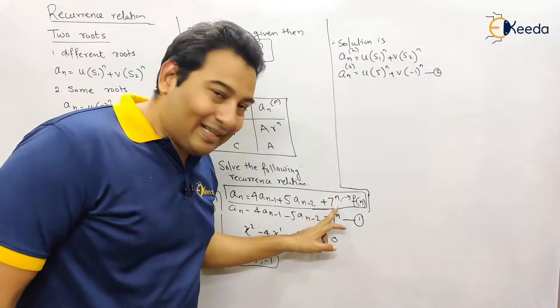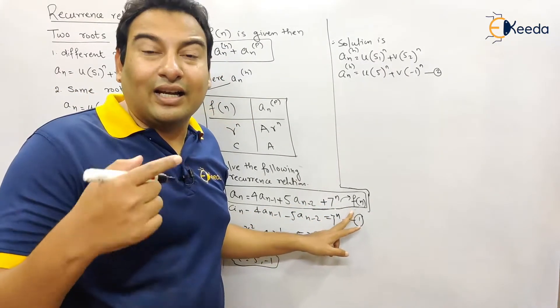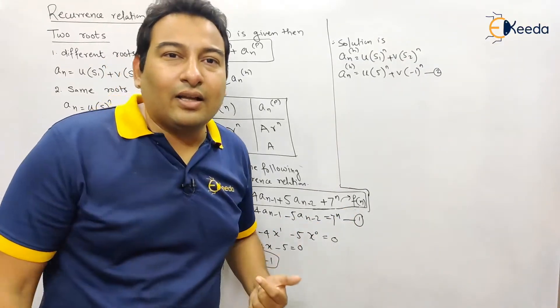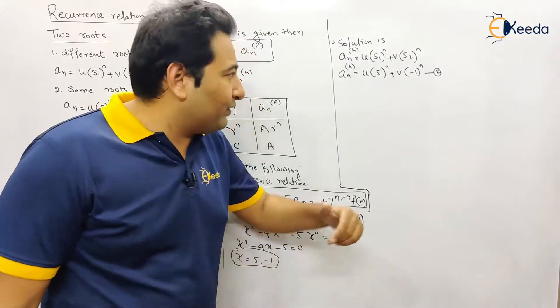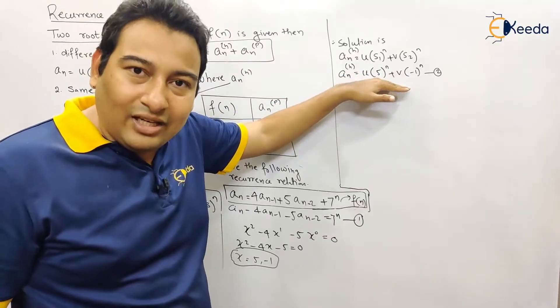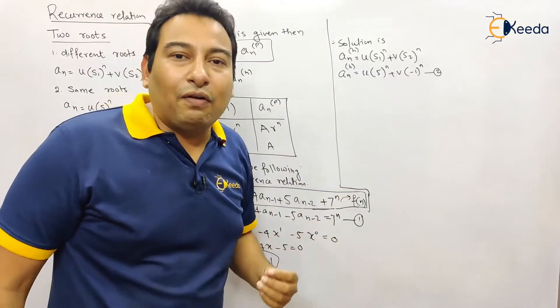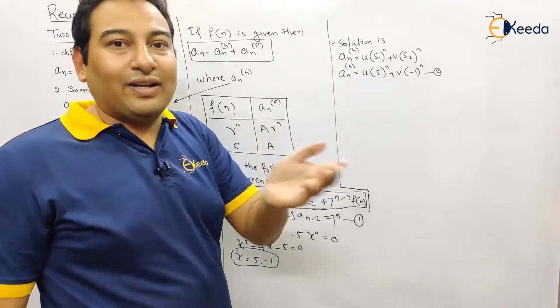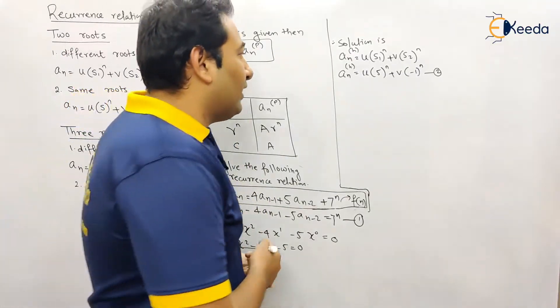Suppose along with that seven raised to n, initial conditions are also given, likewise given in the first problem. Then we will not stop here. For a_nh we will go ahead and find the value of u and v that we did in the last problem. Let us move on.